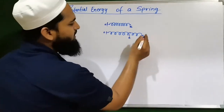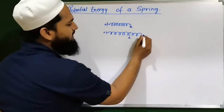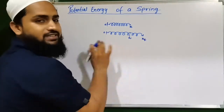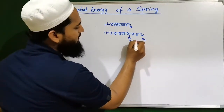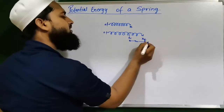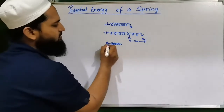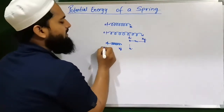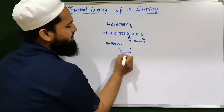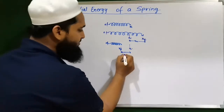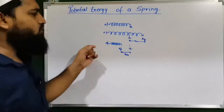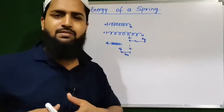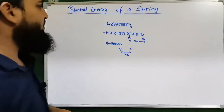This displacement is X_M. This was our initial compressed position, and this became the final position. This is the maximum stretch or maximum displacement — either of the two conditions: stretch or compress. Maximum compression or maximum stretch, this displacement X_M is one of two conditions.